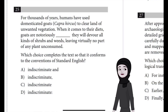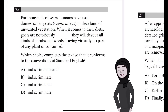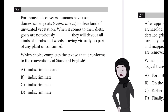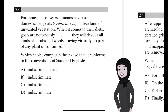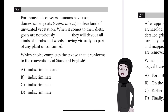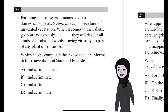Question number 25: For thousands of years, humans have used domesticated goats, Capra hircus, to clear land of unwanted vegetation. When it comes to their diets, goats are notoriously blank — they will devour all kinds of shrubs and weeds, leaving virtually no part of any plant unconsumed. Which choice completes the text so that it conforms to the conventions of standard English?